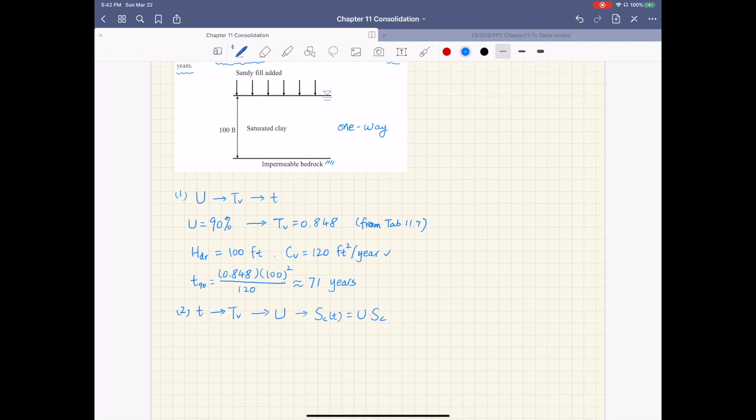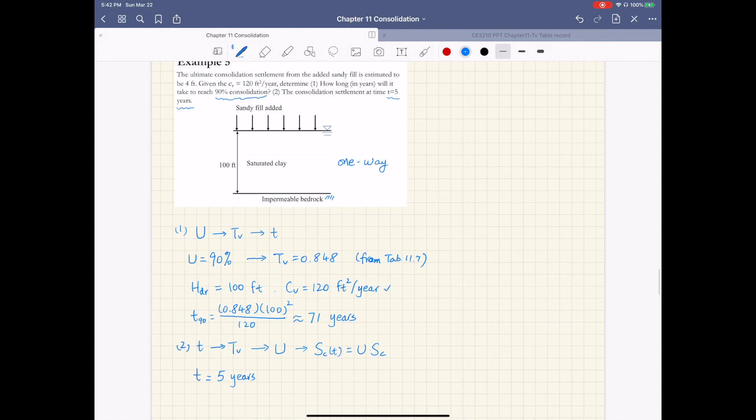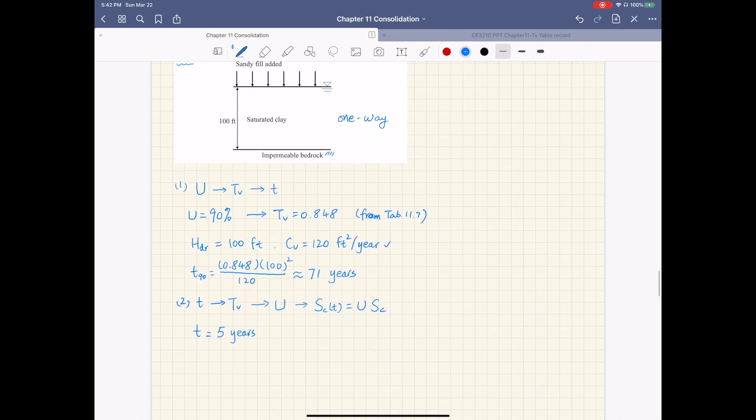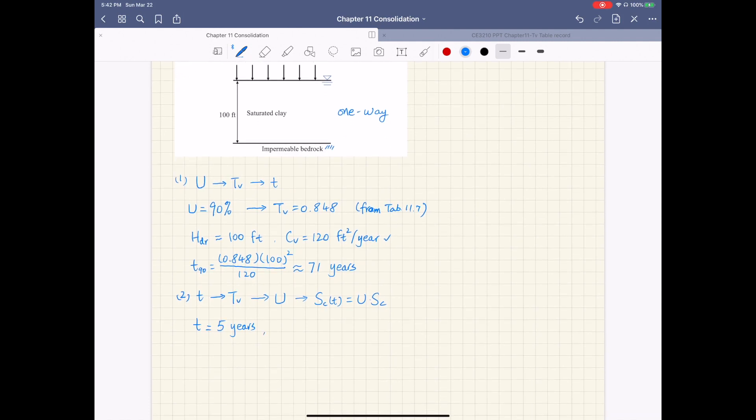So for this problem, t is five years. We're asked to estimate consolidation settlement at t equals five years. And then t sub v, the time factor, is 120 - that's the coefficient of consolidation - times five years, small t, divided by Hdr squared, which is 100 squared. And this gives us 0.06.